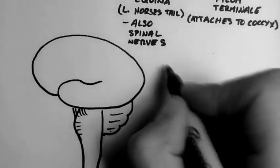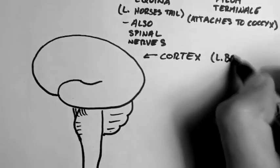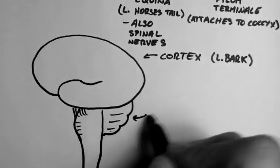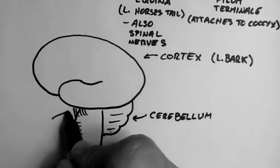So up here I've shown the cortex. Cortex is Latin for bark, and it's the outside layer of the brain. There's stuff inside too, but I'm not going to go into that here. Sitting below the brain is the cerebellum.